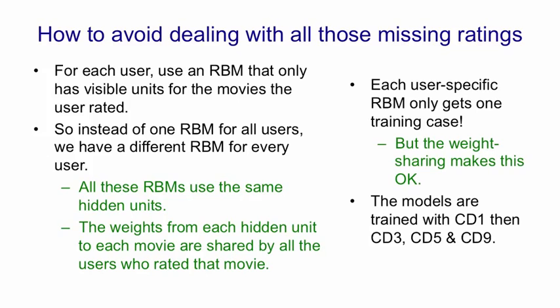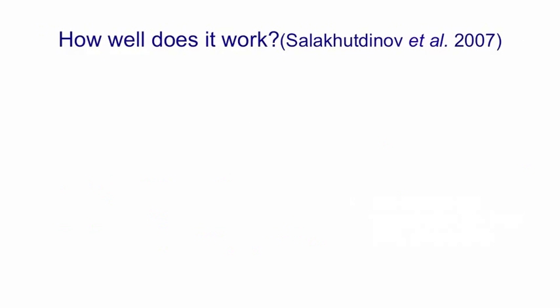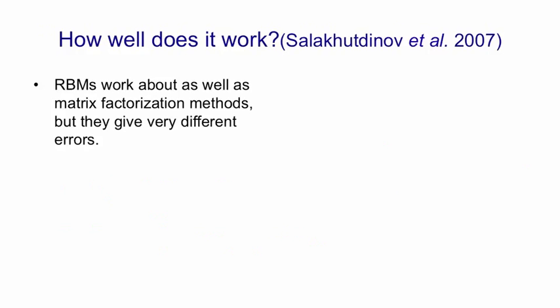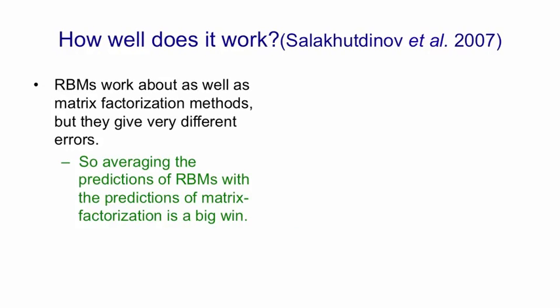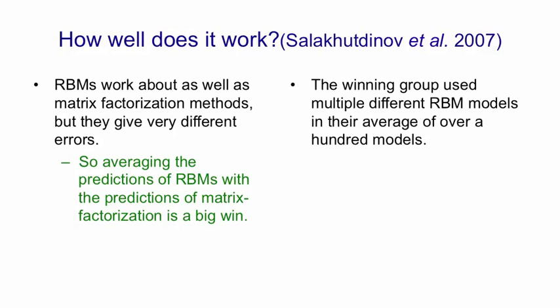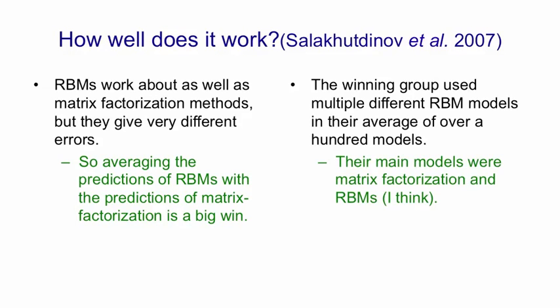The models are trained with CD1, then after a while with CD3 — going up and down three times before collecting statistics for the negative phase — then with CD5 and then CD9. How well does it work? The RBMs work about as well as the matrix factorization methods, but they give very different errors. That means if you average the predictions of the RBMs with those of the matrix factorization methods, you get a big win. The winning group actually used multiple different RBM models and multiple different matrix factorization models in their ensemble. Their main models were matrix factorization models and RBM models.